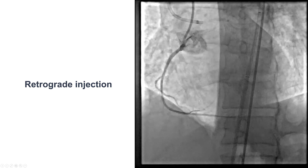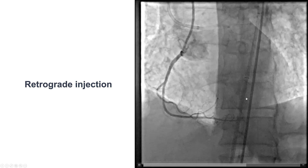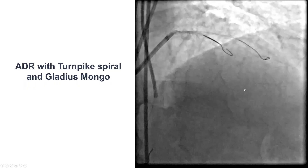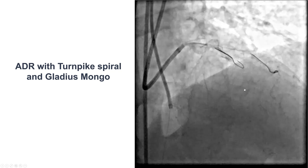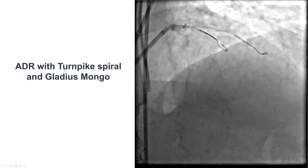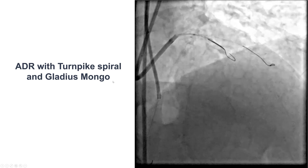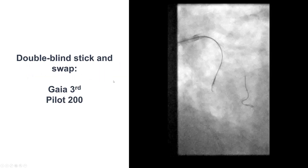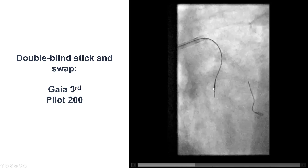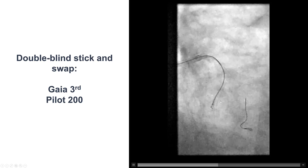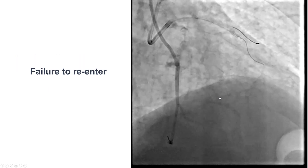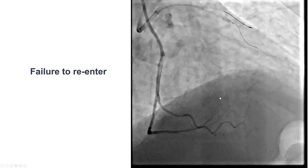We now had obliteration of the retrograde crossing route — the collaterals no longer seemed to supply the LAD. So we decided to do a final attempt using antegrade dissection and re-entry. Using a Turnpike Spiral microcatheter and a Gladius Mongo polymer-jacketed guide wire advanced to the mid-LAD, we tried to re-enter using the Stingray balloon — double blind stick-and-swap sticking on both sides and switching to a polymer jacket wire — but unfortunately that was not successful.